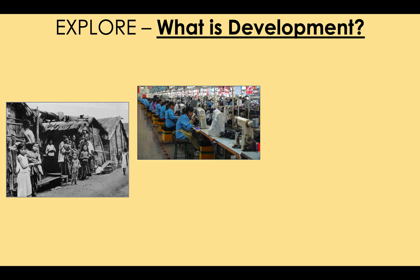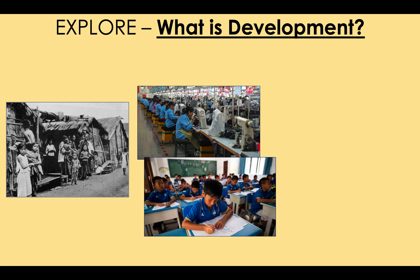In 1976, a new president decided he needed to change this. He got the government to spend money on two important things: education — building lots of schools and paying for teacher training — and also ensuring people had access to good jobs with a good income, so China could sell products around the world and get richer. The government invested in factories and manufacturing.